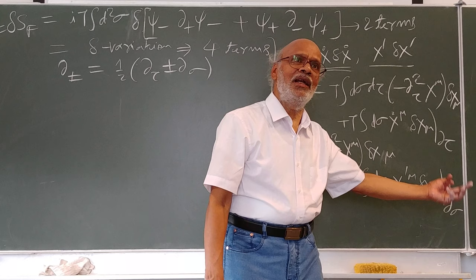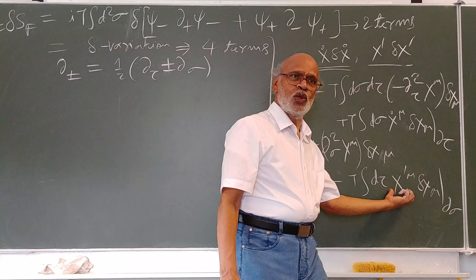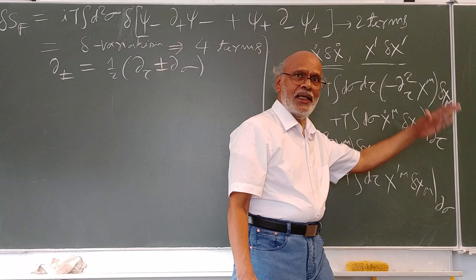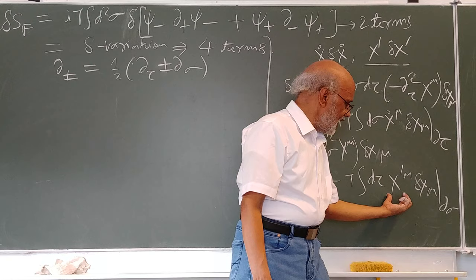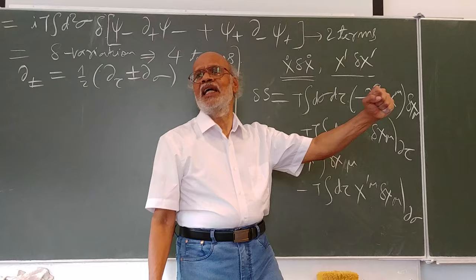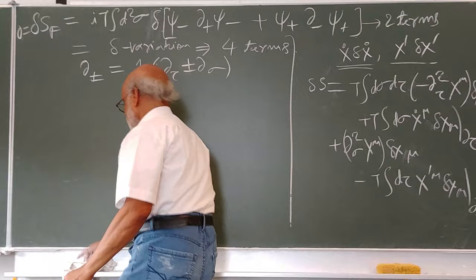For making the space boundary term vanish, we had two choices: Neumann boundary conditions and Dirichlet boundary conditions. In the Neumann boundary condition, x-prime-mu is assumed to be zero, so x-mu can fluctuate — the ends of the string can fluctuate. In the Dirichlet case, x-mu cannot fluctuate and is fixed at a point. A similar situation applies here.